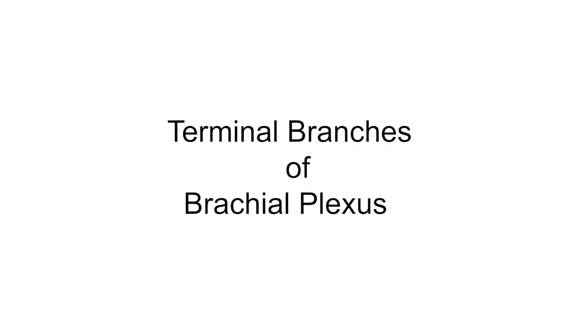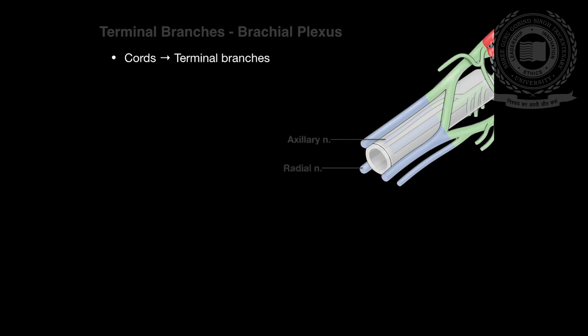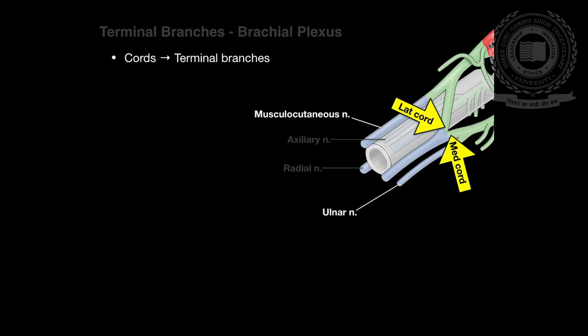Terminal branches of the brachial plexus are derived from the cords. The posterior cord gives rise to the axillary and the radial nerve. The lateral cord gives the musculocutaneous nerve, the medial cord gives the ulnar nerve, and the medial and lateral cords together form and give rise to the median nerve.